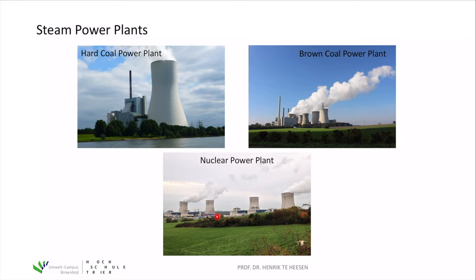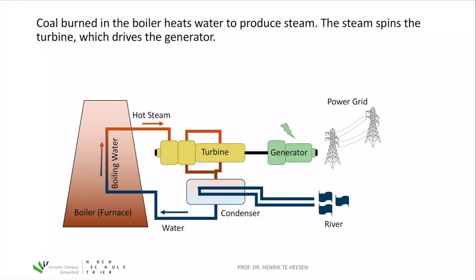The principle is the same. You get heat, you heat up water, boil the water, and use the hot steam to drive turbines. Here you can see the principle of a steam power plant: the water runs through the boiler, is heated up and boiled to get hot steam. The hot steam runs through a turbine, spins the turbine, and the turbine drives the generator to generate electricity. Then the hot steam is cooled down in a condenser to get cold water and return it to the cycle.